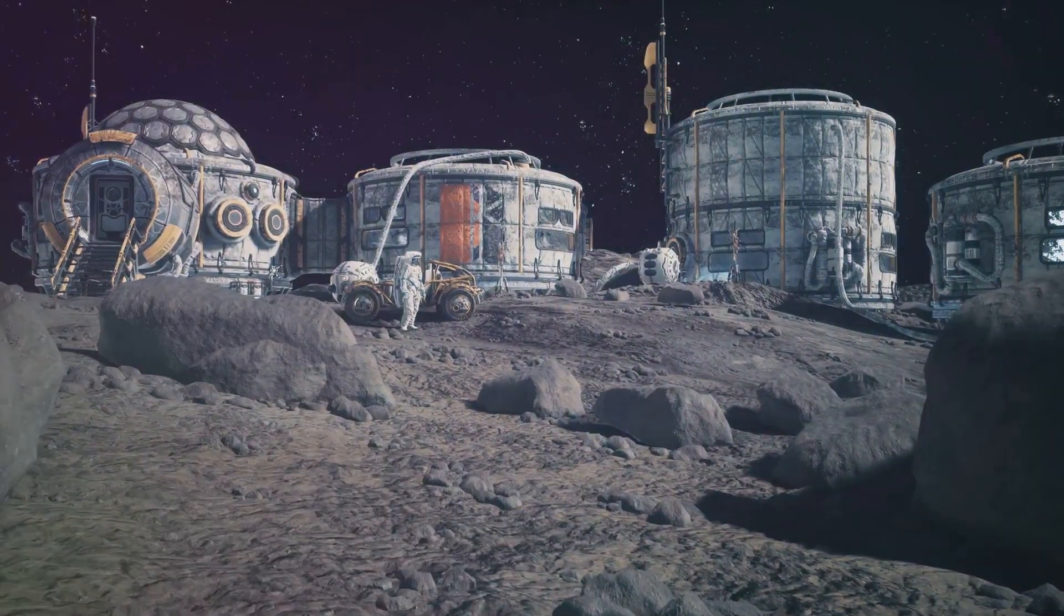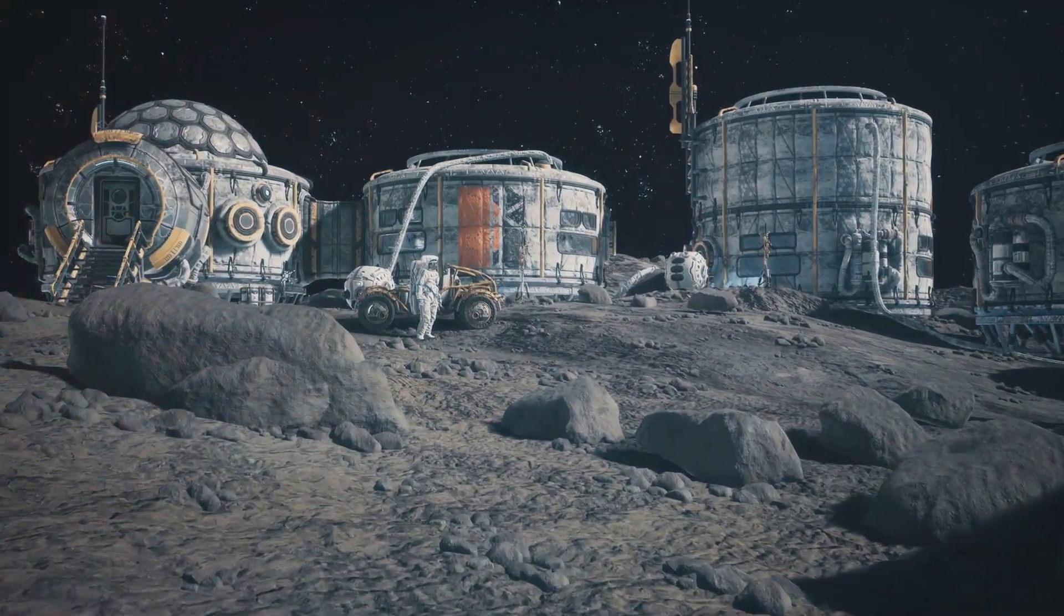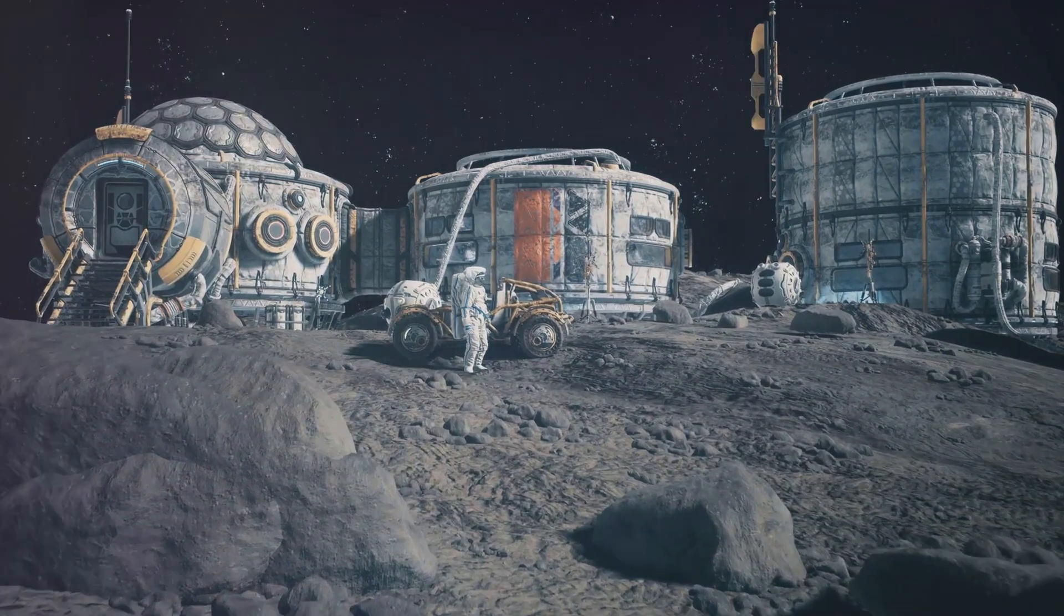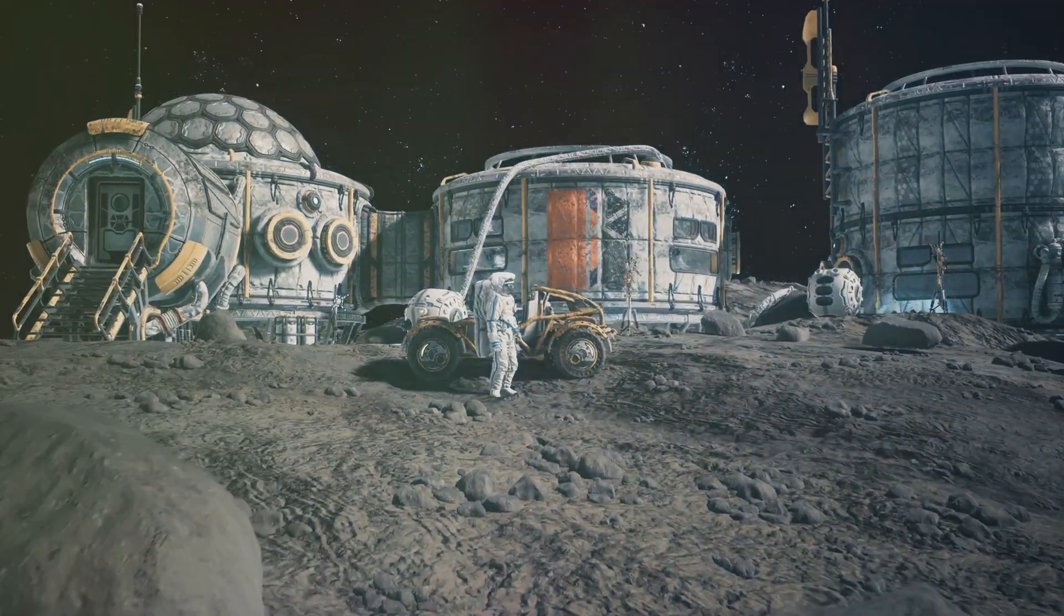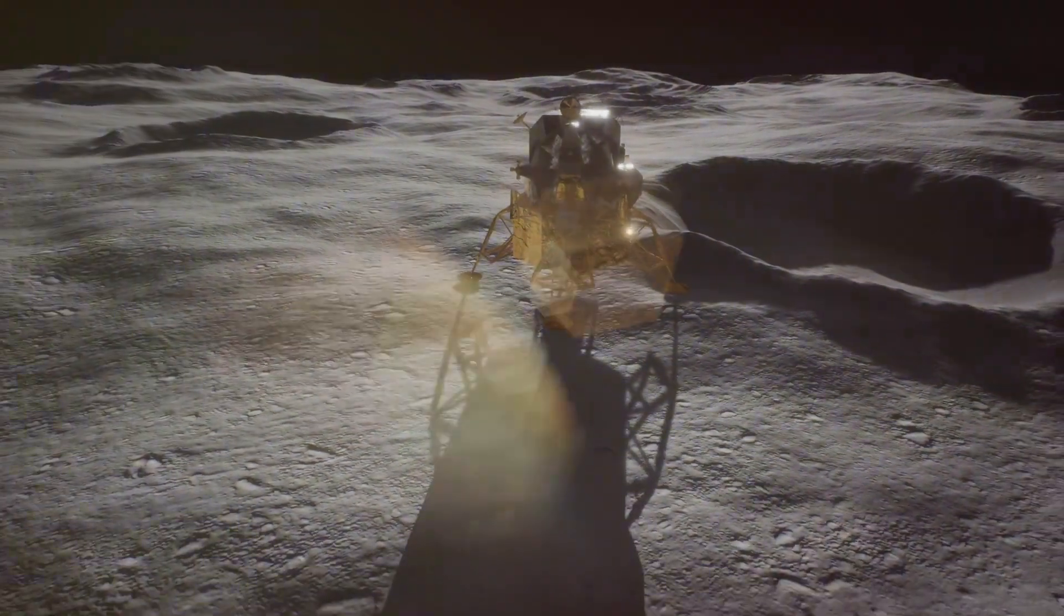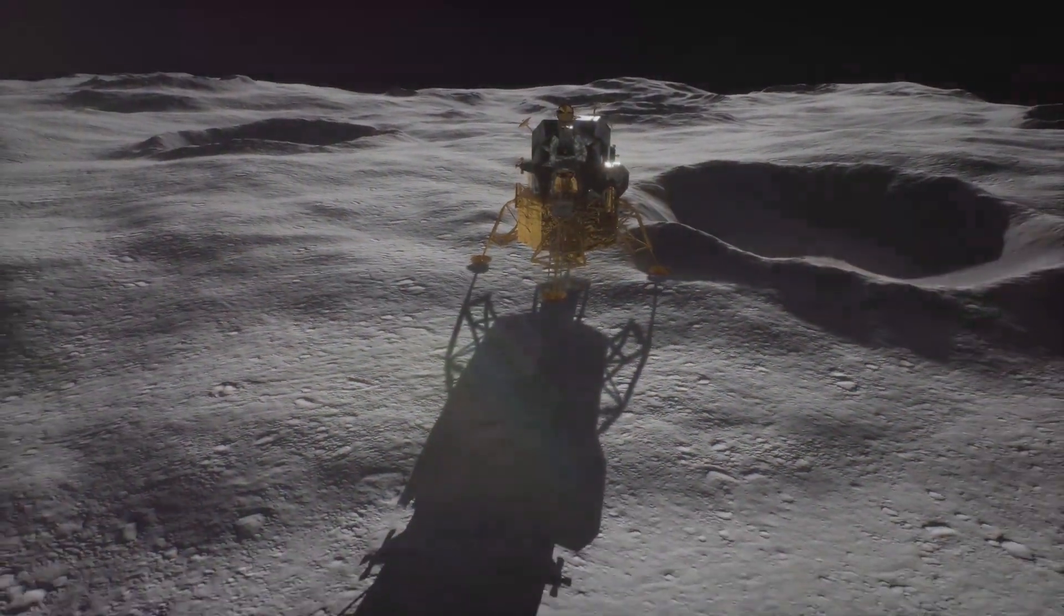First, let's talk about the missions. The Artemis program, for instance, aims to return humans to the moon by 2024, this time to stay. But it's not just about planting flags and leaving footprints. The ultimate goal is to establish a sustainable outpost, a stepping stone for future missions to Mars and beyond.